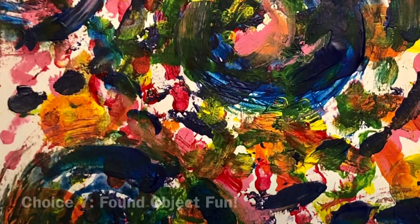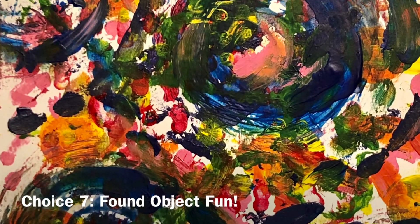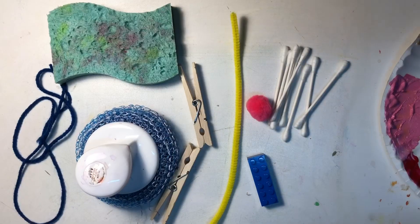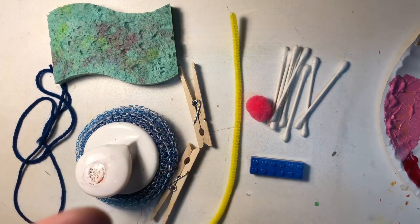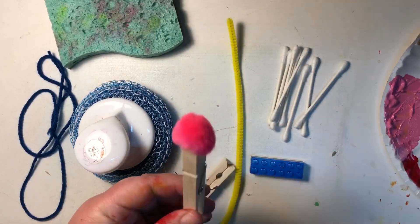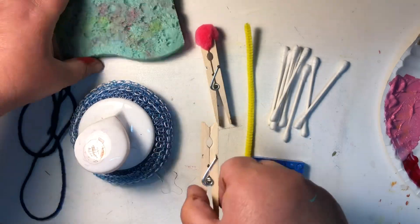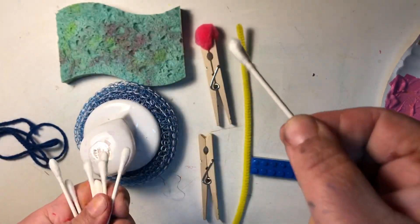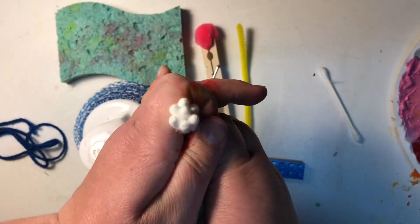I saved the messiest one for last. This one is found object fun because we're not using paint brushes to apply paint for this one. We're using fun objects from around your house. Please ask your parents permission to be able to go around your house and find things with interesting textures that would make interesting marks on your paper. I looked for things that had texture and I thought would make really cool shapes.